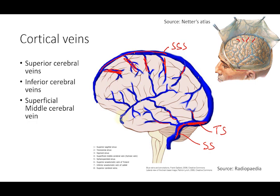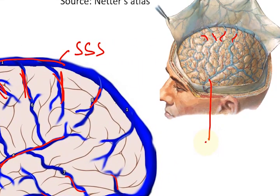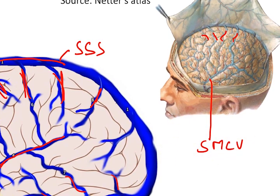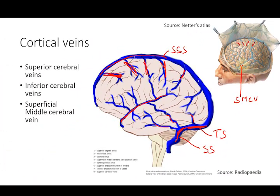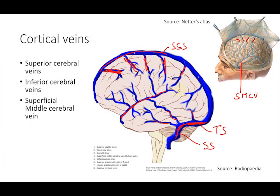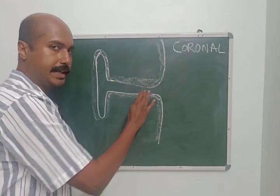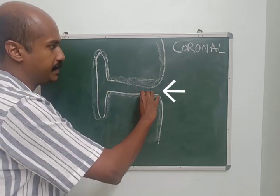The next is a very important spotter for MBBS examinations — this is the superficial middle cerebral vein. It is seen superficially over the sylvian fissure or the lateral sulcus. On the deeper aspect, you have the middle cerebral artery with the deep middle cerebral vein. This is the superficial middle cerebral vein seen on the surface aspect of the sylvian fissure.